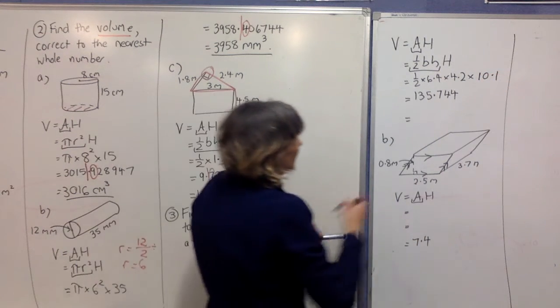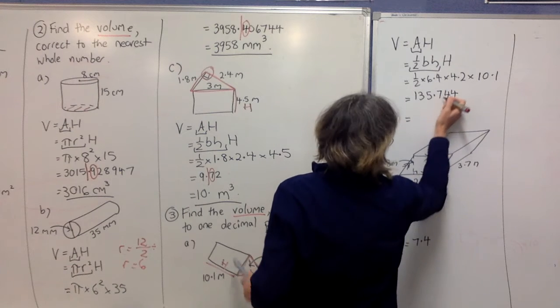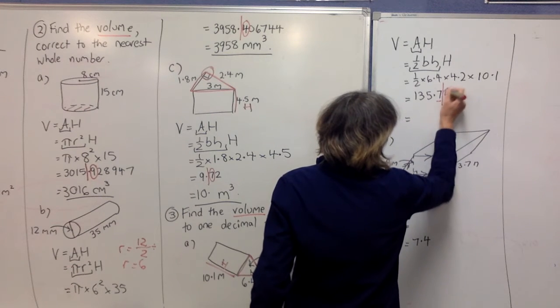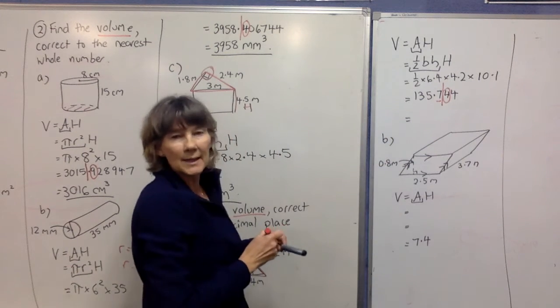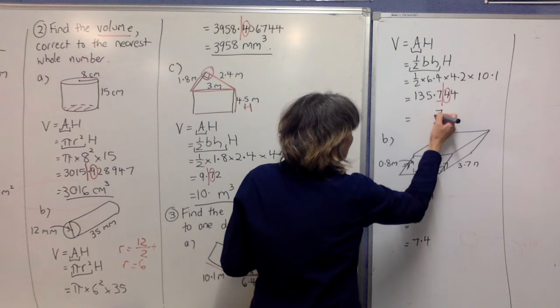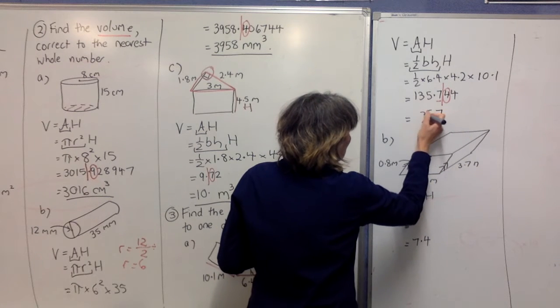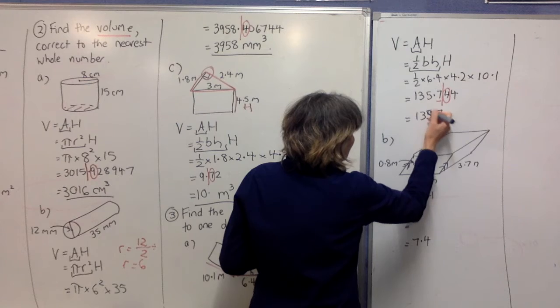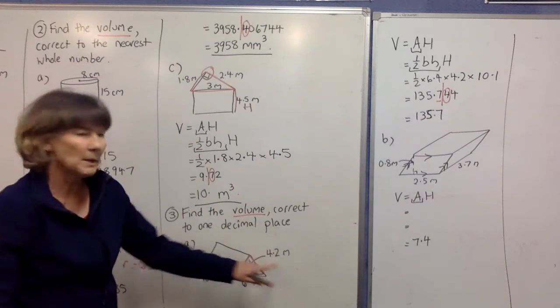We're rounding to one decimal place this time. That's a 4, which is less than 5, so this will stay as a 7. We'll write the rest of our answer in. We're in meters and it's cubed for volume.